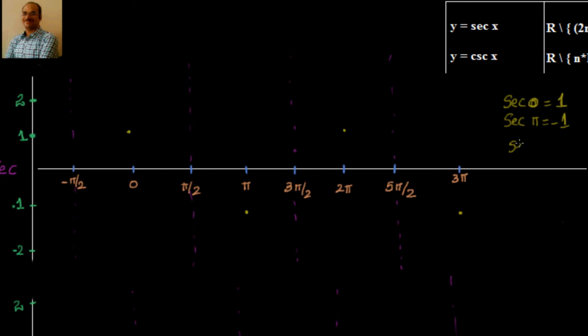Cos of 60 is 1/2, so secant of π/3 is equal to 2. That means this is 0, π/2 is 90. If I divide this into 3 parts, 30, 60, at 60 I will have 2.